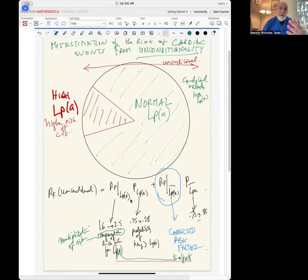I'm simplifying - as a probability person, I would make it more complicated by integrating. But anyway, risk factor conditional on having high LPA times probability of being in the high LPA category, plus risk factor conditional on normal LPA times the probability of having normal LPA, which is one minus the other.